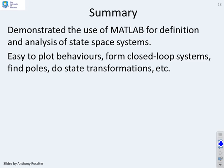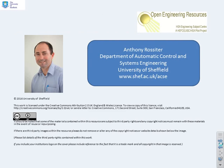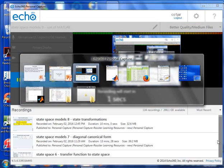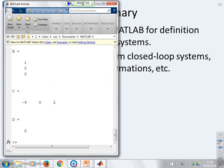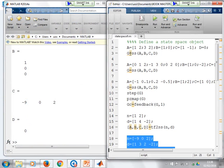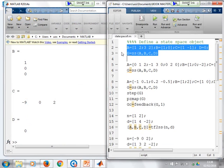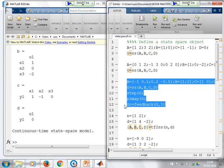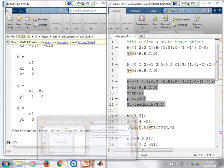In summary, we've demonstrated the use of MATLAB for definition and analysis of state-space systems. Easy to plot behaviors, to form closed-loop systems, to find poles, to state transformations, and so on. What we should do quickly, before we finish, is just remind you that the code is provided for you in this state-space file. If you go to state-space 9, you'll see all the codes there. You can select the different bits you want, and you can run them. If you want to see and run them, just download this file, and it will repeat what we did in this particular video.